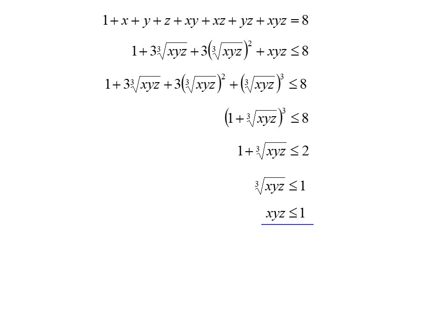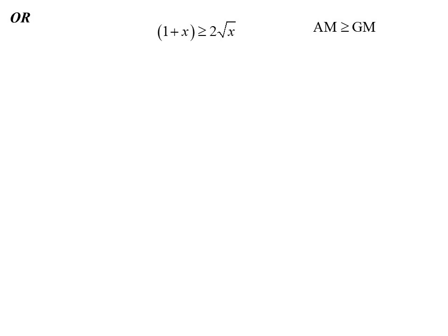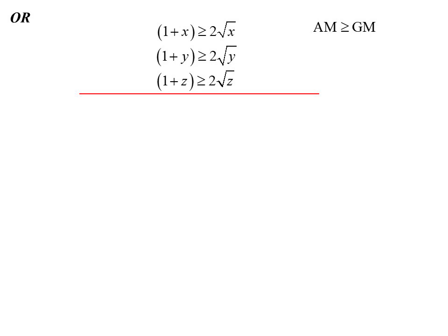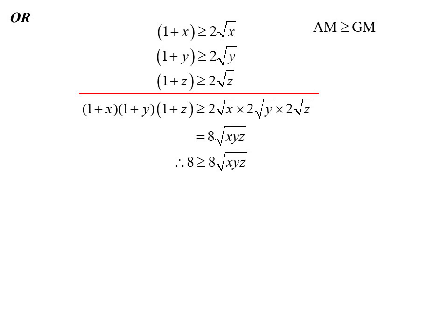That was a creative way of getting the answer, but here's a much quicker approach. By AM-GM, 1 plus X ≥ 2√X, and similarly 1 plus Y ≥ 2√Y and 1 plus Z ≥ 2√Z. The inequalities are all in the same direction, so multiplying them gives (1+X)(1+Y)(1+Z) ≥ 8√(XYZ). Since (1+X)(1+Y)(1+Z) equals 8, we get 8 ≥ 8√(XYZ), and the result XYZ ≤ 1 follows immediately.